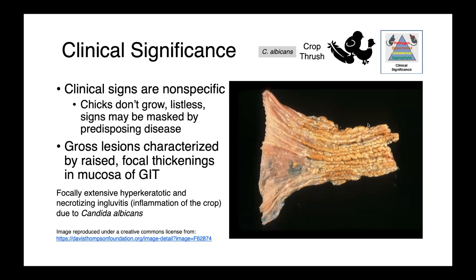In affected animals, clinical signs tend to be nonspecific — the chicks may not grow, they might be listless, or the clinical signs can be masked by whatever the predisposing disease is. Gross lesions are characterized by raised focal thickenings in the mucosa of the gastrointestinal tract. We can see focally extensive hyperkeratotic and necrotizing ingluvitis, which is the term used to describe inflammation of the crop due to Candida albicans.